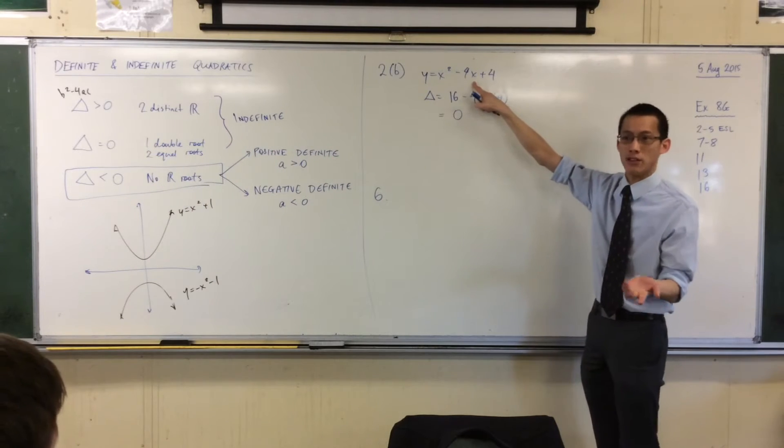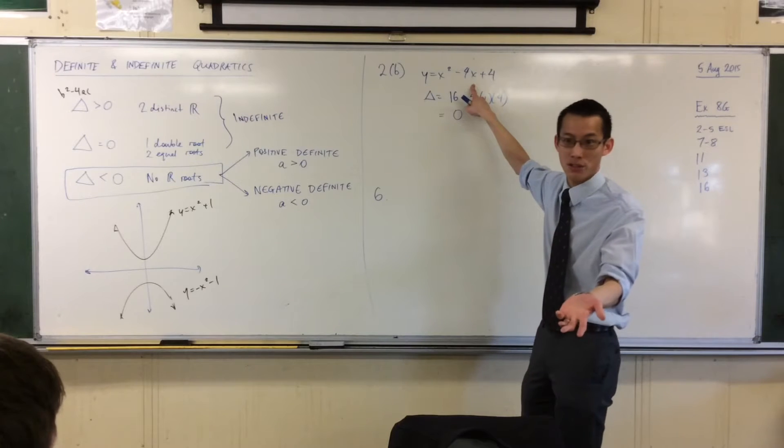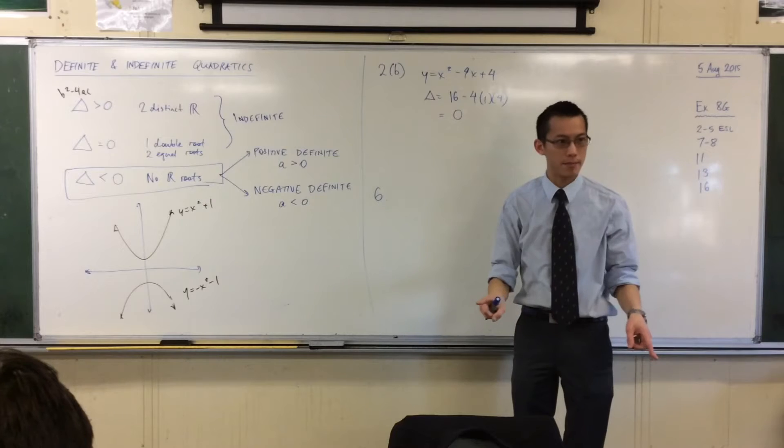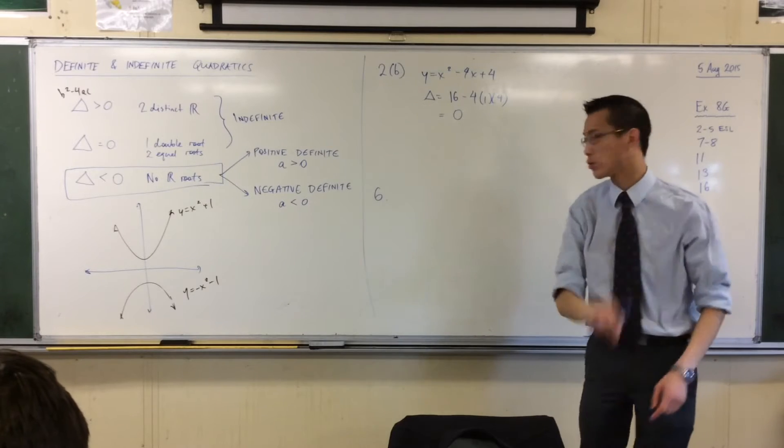Because this guy up here is actually a perfect square. You can factorize it now, can't you? Now that I'm asking you to, what's the factorization of this guy? x minus 2 squared. So it has that double root at x equals 2.